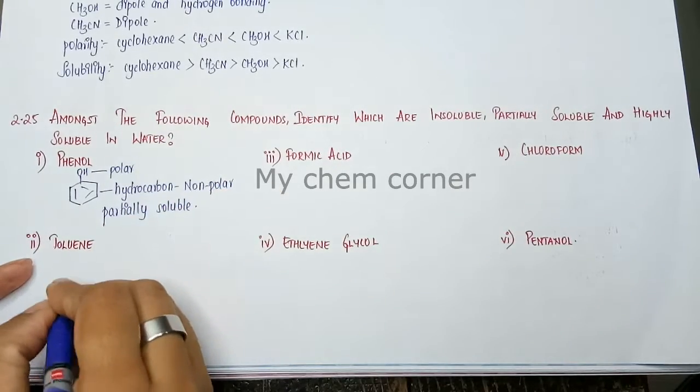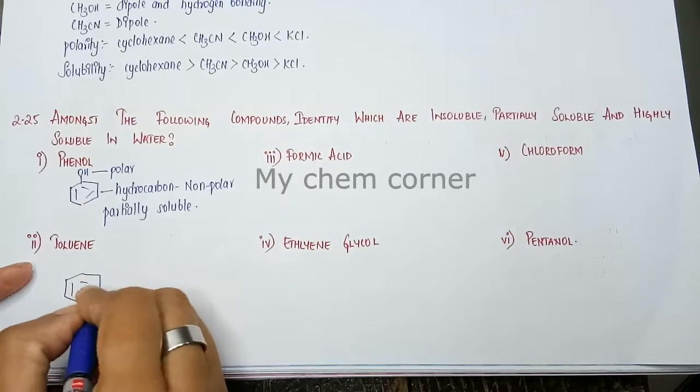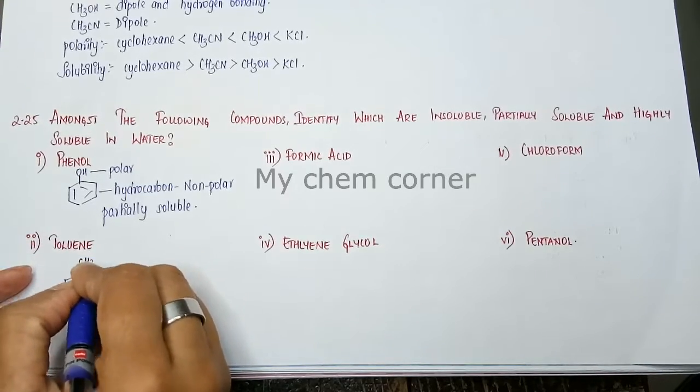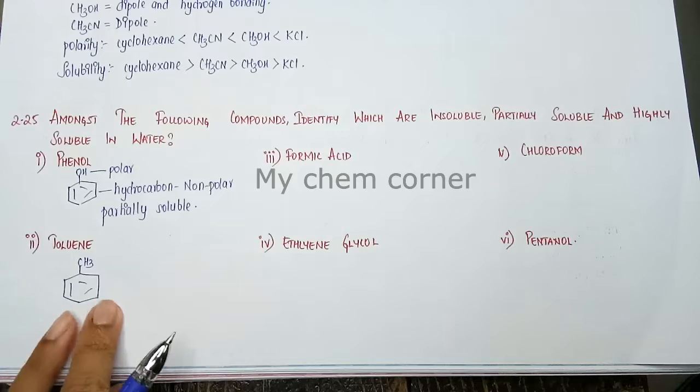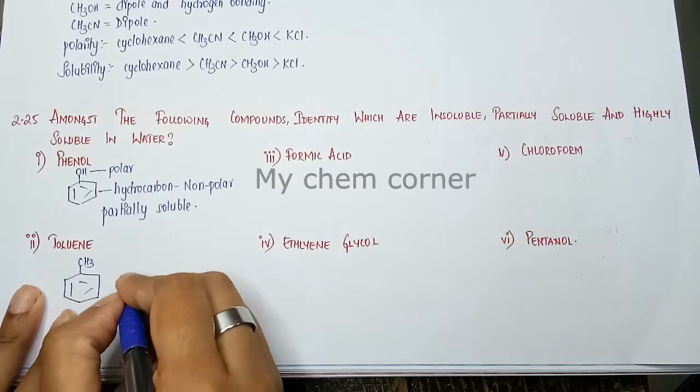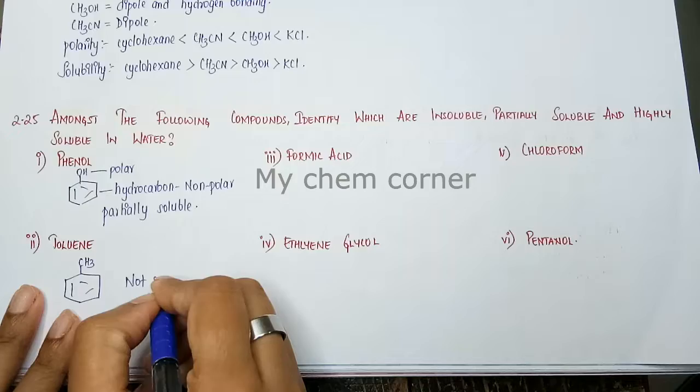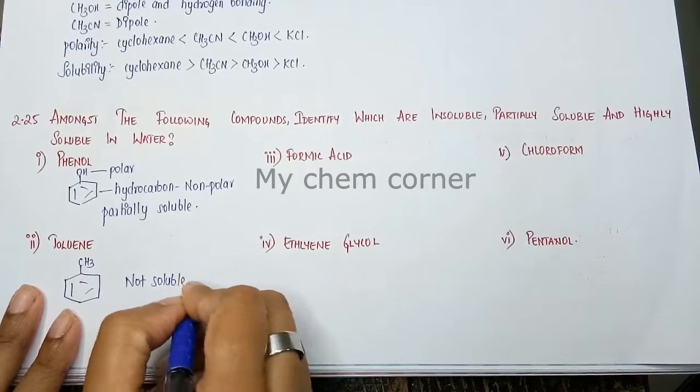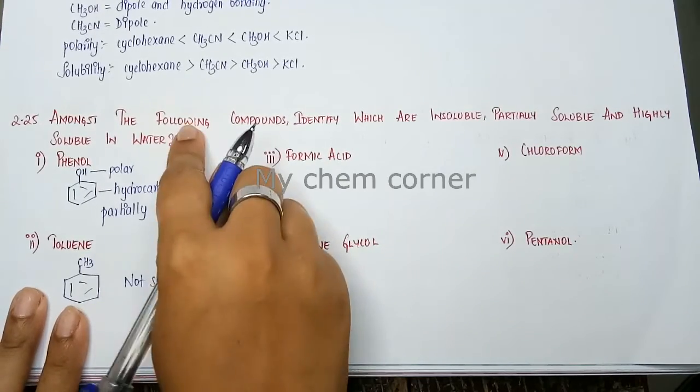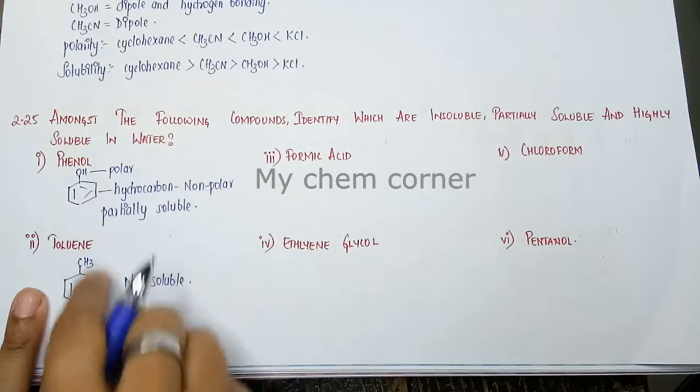Next one is toluene. Now toluene is a benzene ring with CH3. CH3 is a hydrocarbon. Benzene is also hydrocarbon. Therefore, this is not soluble because it is a hydrocarbon and hydrocarbons are non-polar and water is a polar molecule.